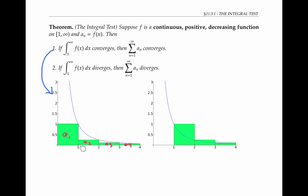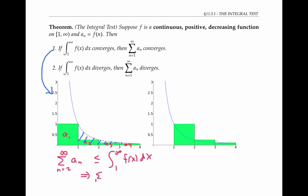If we focus on the second rectangle onwards, then the combined area of those rectangles is less than the area represented by the integral. So we can say the sum from n equals two to infinity of a sub n is less than or equal to the integral. Since the integral converges by assumption, this series has to converge, and therefore our original series from n equals one to infinity must also converge.